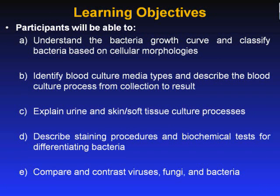My goal today is to provide you with an overview of basic microbiology and the concepts involved, including the bacterial growth curve and classifying organisms based on morphologies. I will describe blood, urine, and skin and soft tissue cultures, focusing on types of media, sample collection processes, culture procedures, as well as speciation and susceptibility testing. I will also explain basic staining procedures such as the simple stain, gram stain, spore stain, negative stain, and acid-fast stains, along with biochemical tests used for differentiating bacteria. Lastly, I will briefly mention some facts about fungi and viruses, focusing on the current 2009 novel H1N1 influenza pandemic.